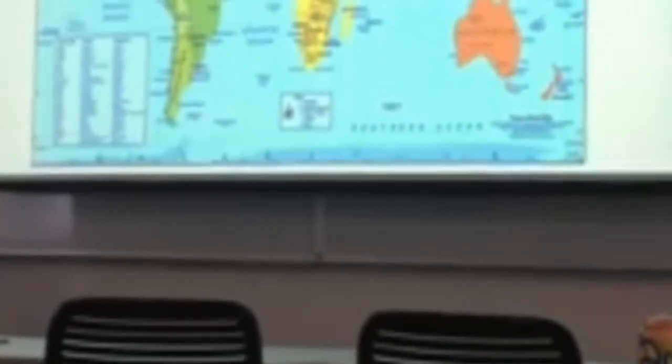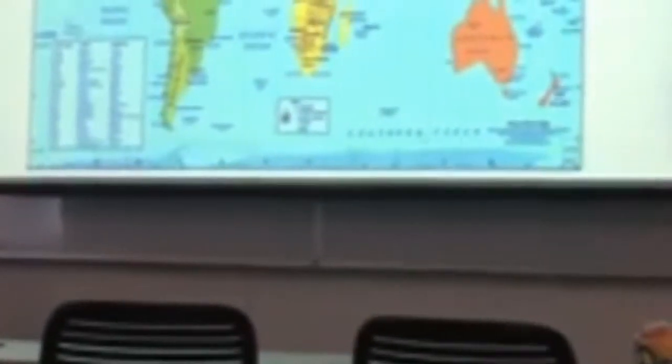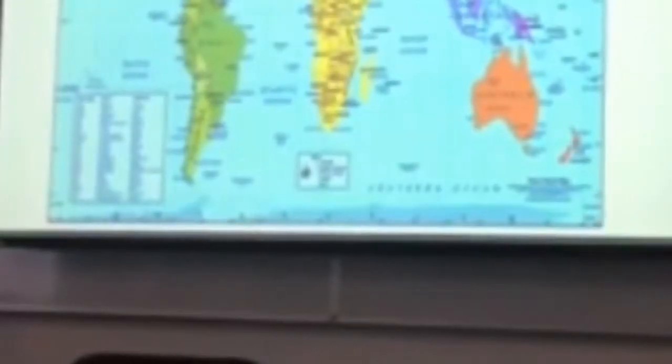That's what introduces me to my next map, the Gall-Peters Projection map, presented in 1974 by Dr. Arnold Peters, who claimed he invented it, though well after the discovery of an identical map made by James Gall in the 1800s, therefore calling it the Gall-Peters Projection.